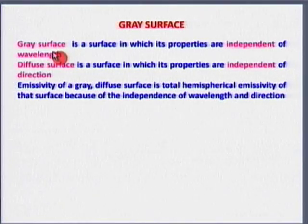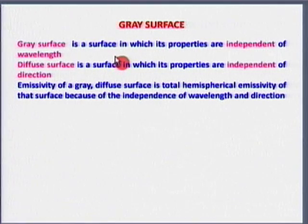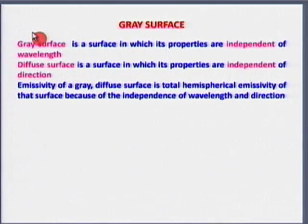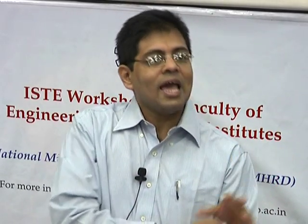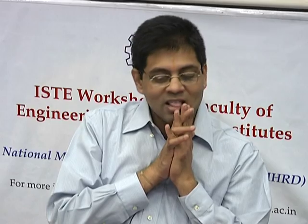What is a grey surface? A grey surface is one for which properties are independent of wavelength. A diffuse surface is one where properties are independent of direction. If a surface is diffuse and grey, nothing varies with direction and nothing varies with wavelength. However, a surface can be diffuse and grey for emission but need not be diffuse and grey for absorption — it can emit without directional preference but may filter certain wavelengths of incoming radiation.